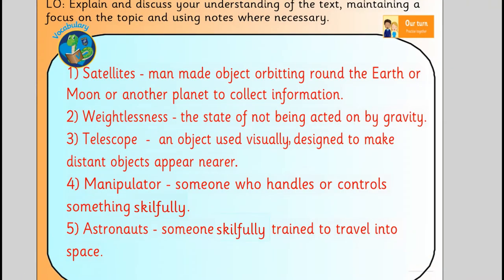These are the definitions. First, satellites — a man-made object orbiting around the Earth, Moon, or another planet to collect information. Two, weightlessness — the state of not being acted on by gravity. Three, telescope — an object designed to make distant objects appear nearer. Four, manipulator — someone who handles or controls something skilfully. Five, astronauts — someone skilfully trained to travel into space.